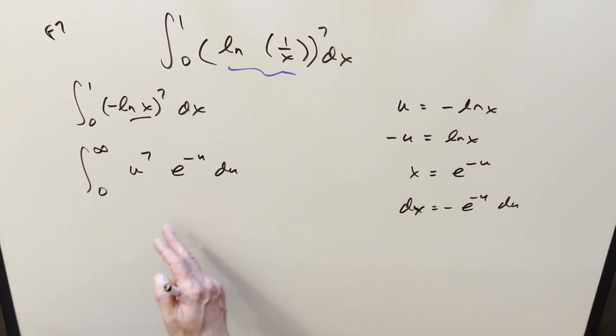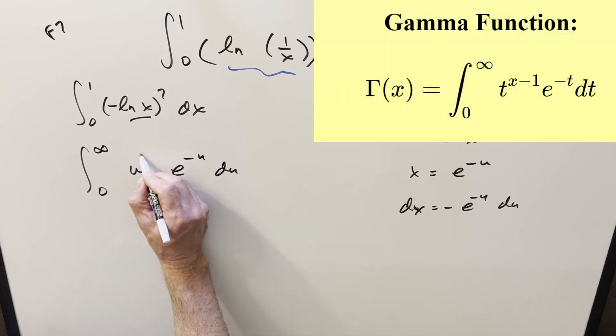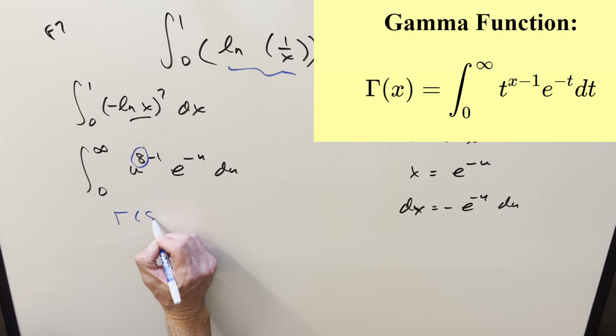But now the way we have this here, this is going to match our definition for the gamma function. I can write, just to make it clear, I can change the exponent of 7 to 8 minus 1. So that way, our input on the gamma function is going to be just 8. And so what we have is just going to be, this whole thing is going to be gamma of 8.